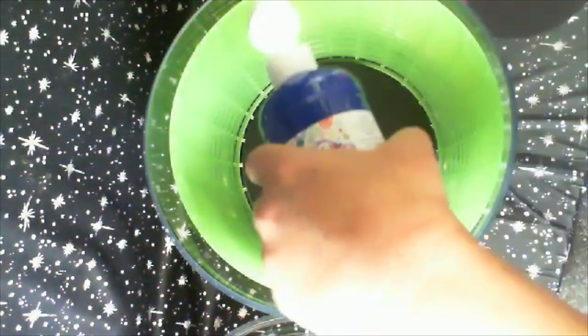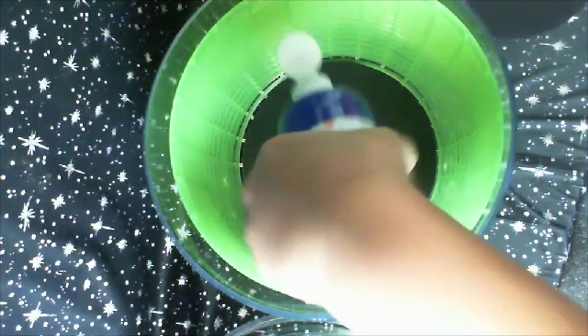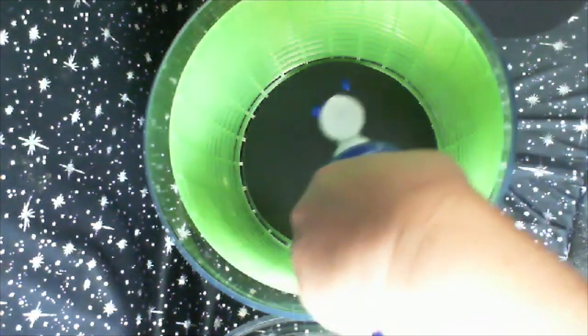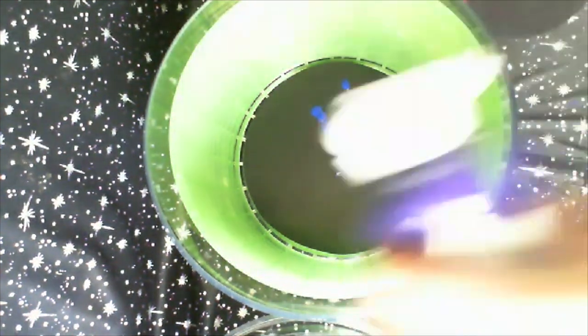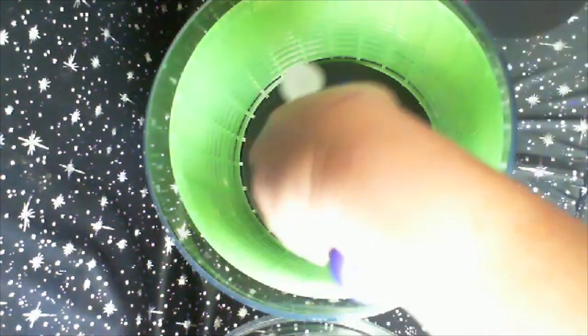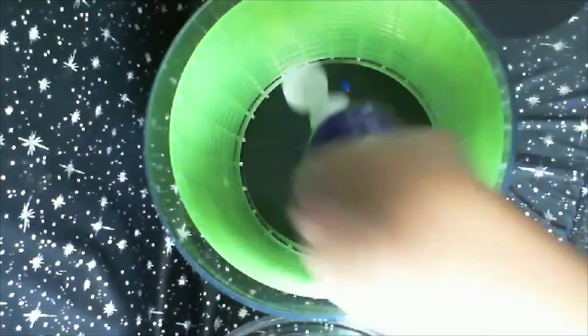Now you'll drip different colors of washable tempera paint onto your construction paper. Imagine each different color is a different element like hydrogen or helium. Pick just a few and make sure that the paints touch a little bit as you drip them onto the construction paper surface.